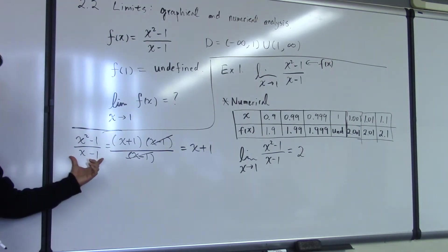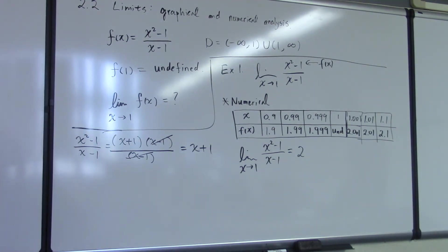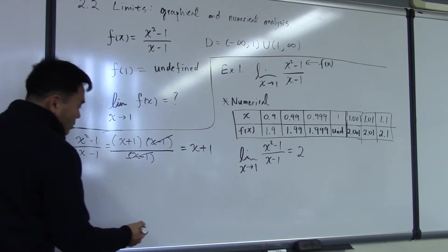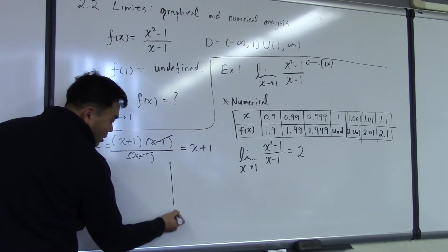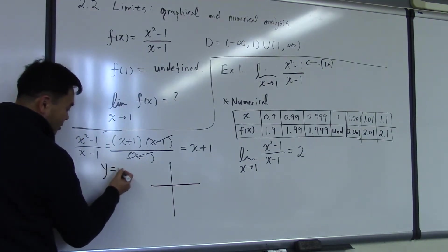So while it is true that this is the same as that, when you draw the graph of this, it distinguishes itself from this one at just one point, which is x equal to positive 1. At that point, it will be different.